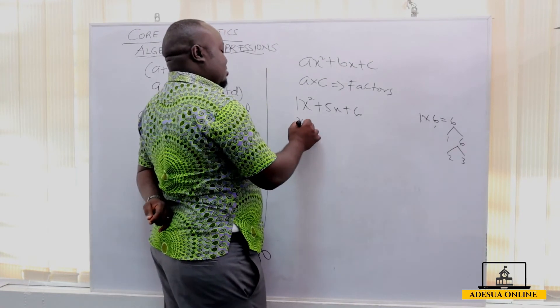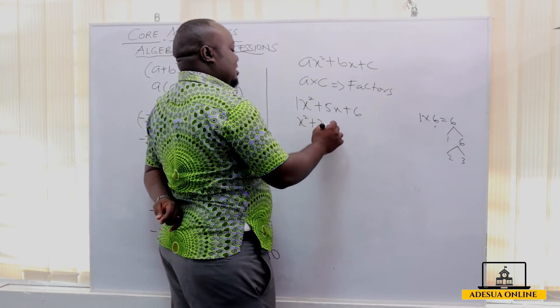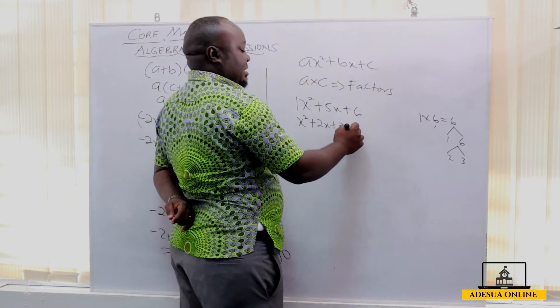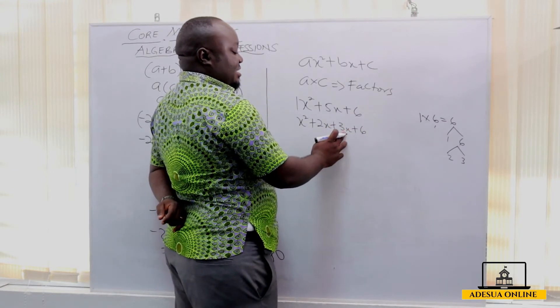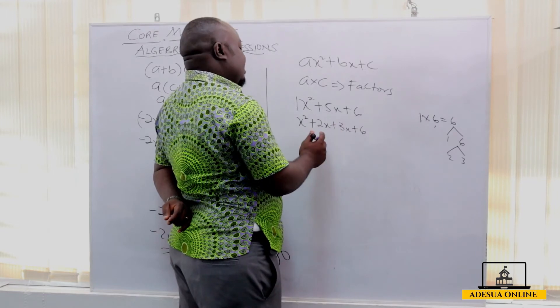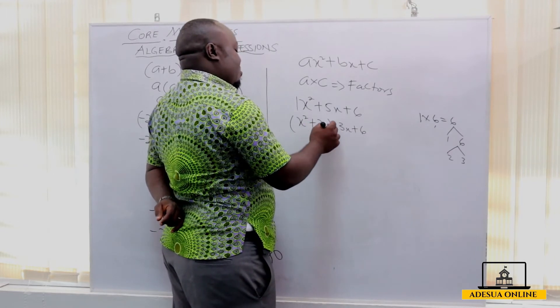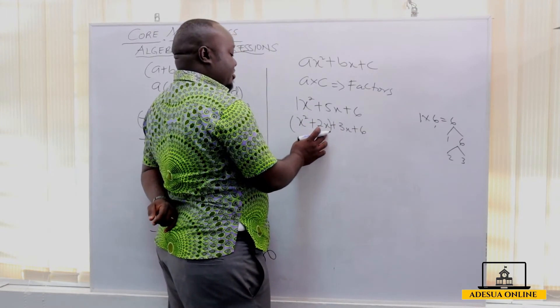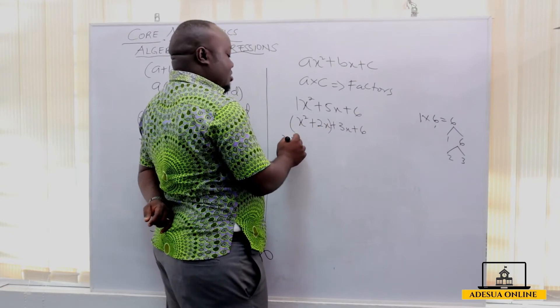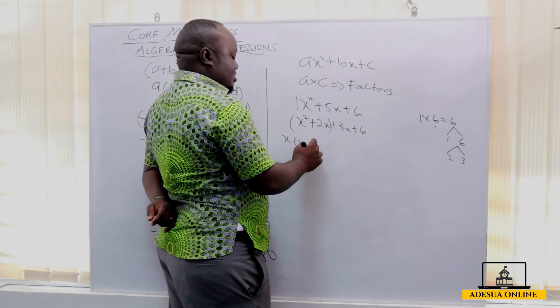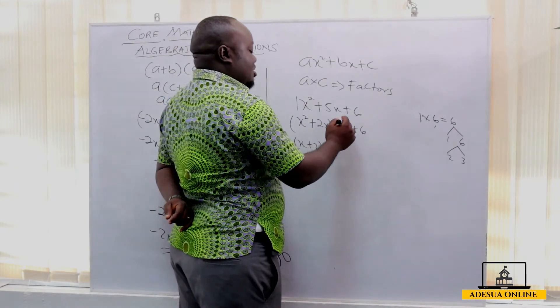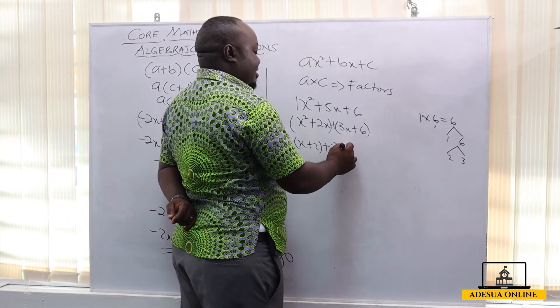So I write this as x squared plus 2x plus 3x plus 6. Because 2x plus 3x is equal to 5x. So we look for the common variable here. We factorize the common variable, which is x, and then we have x plus 2. Then plus, what is common here? 3. We have x plus 2.